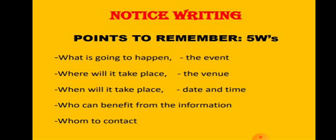There are five W's to be remembered for effective notice writing: what, where, when, who, and whom. If you remember these five W's while writing the content, you will be able to develop all the necessary details. You have to answer — what is going to happen, where it will take place, when it will take place with date and time, who can benefit from the information, and whom to contact.